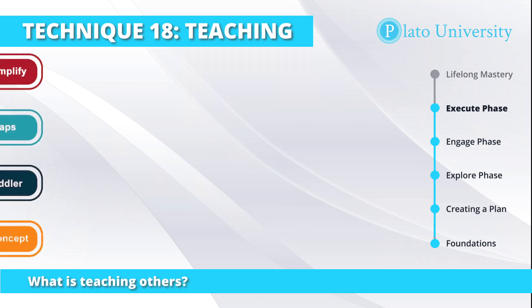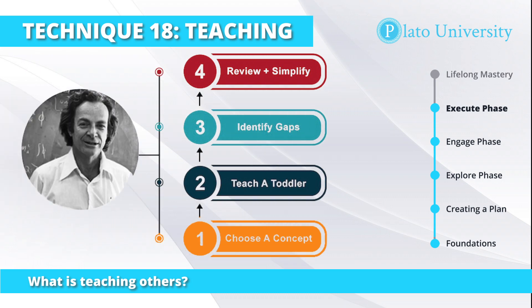Specifically today, we're going to cover the Feynman Technique. At the core of this is your ability to teach other people the concepts that you're learning. You've probably heard the popular saying: once taught, twice learned. The idea is simple — when we teach other people, we reinforce our own learning. And this idea is not only supported by neuroscience, it is also the secret weapon behind some of history's most gifted thinkers.